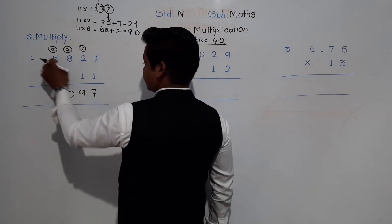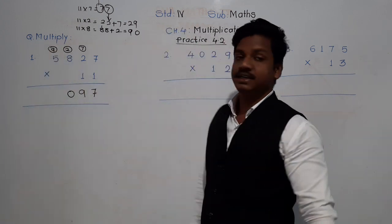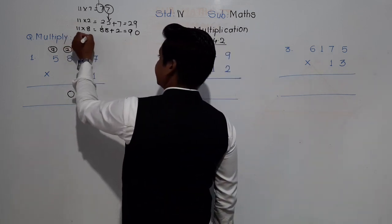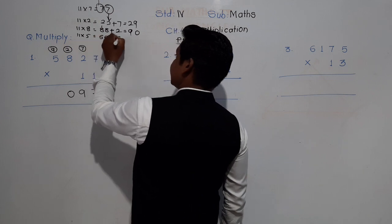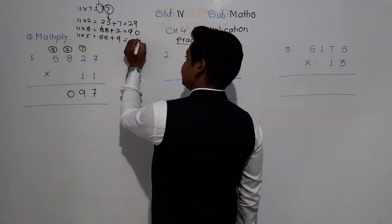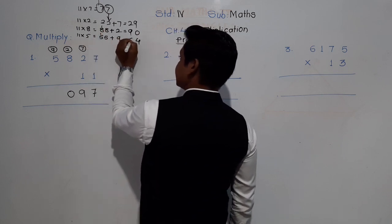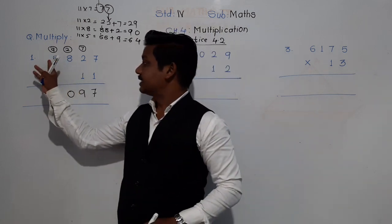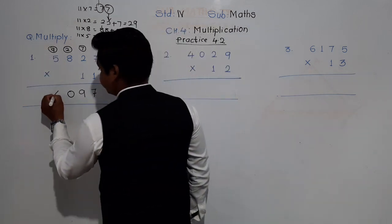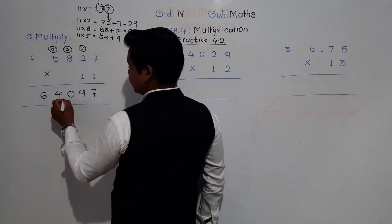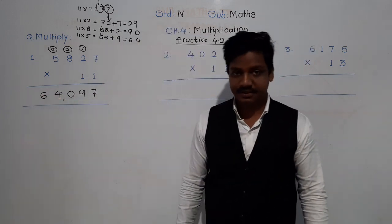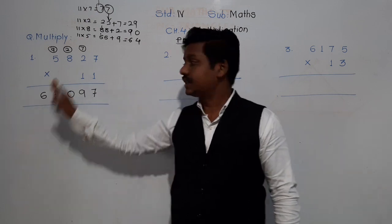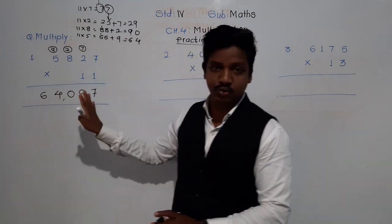Again thousands place: 11 fives are 55 plus 9. 5 plus 9 is 14, 1 will be carried, 5 plus 1 is 6, that's 64. As there is no next place to carry, we directly write 64. So the answer is 64,097. This rough work you can do on the rough page and the answer you can directly write in the textbook only.